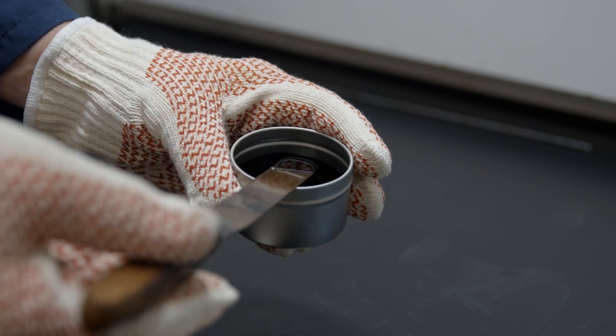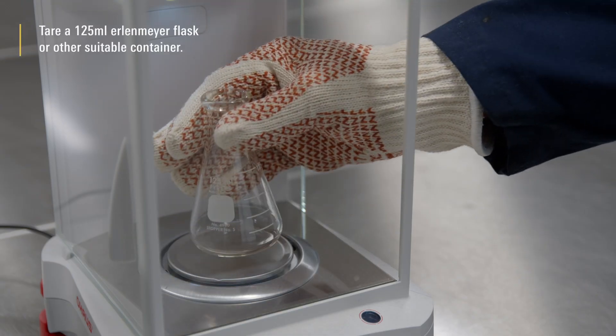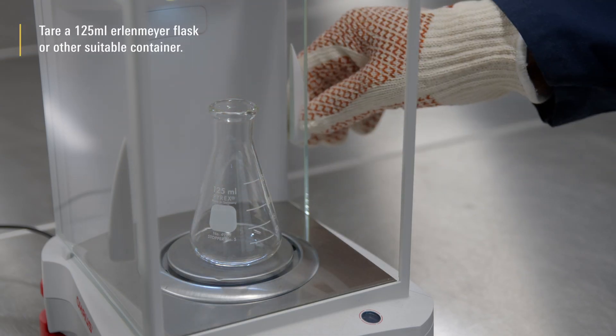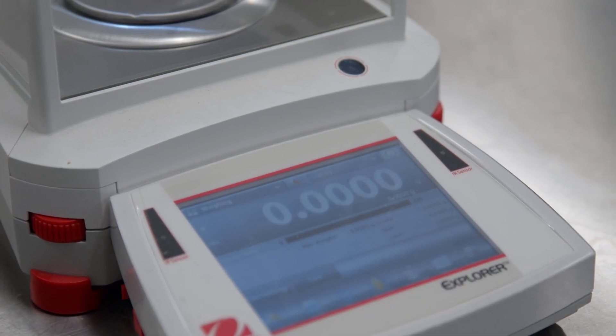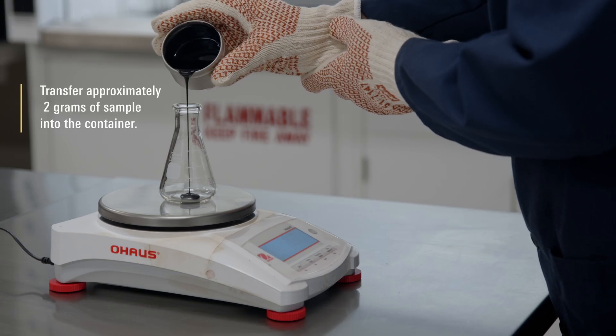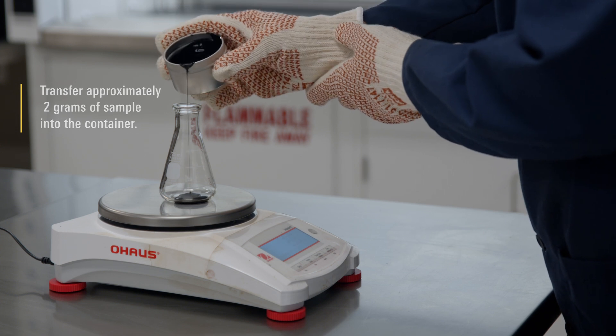Do not stir air into the sample. Tear a 125 mL Erlenmeyer flask or other suitable container. Transfer approximately 2 grams of sample into the container.